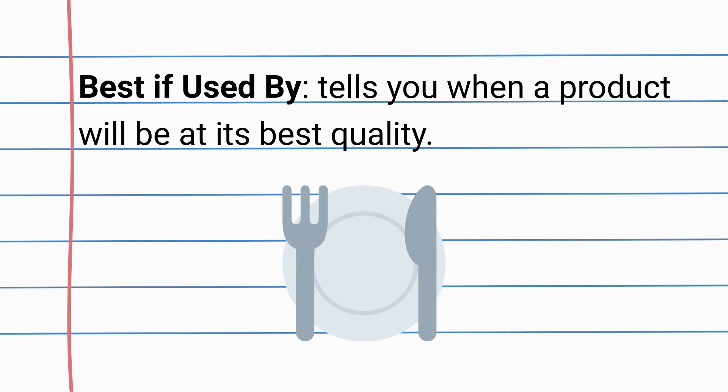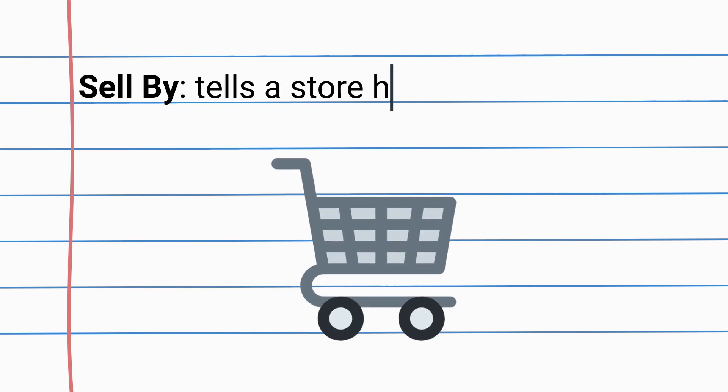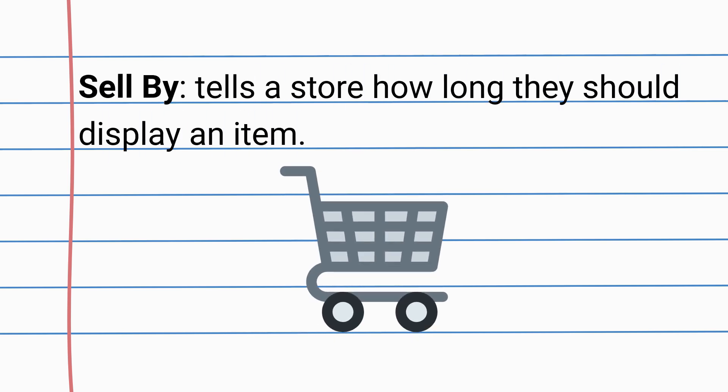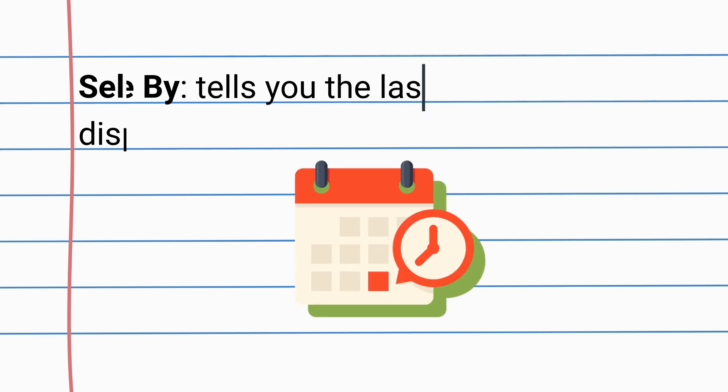Next we have our Sell By date, which tells a store how long they should display a food item and when they should take the product off of its shelves.